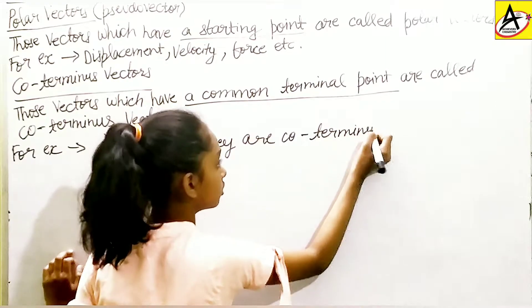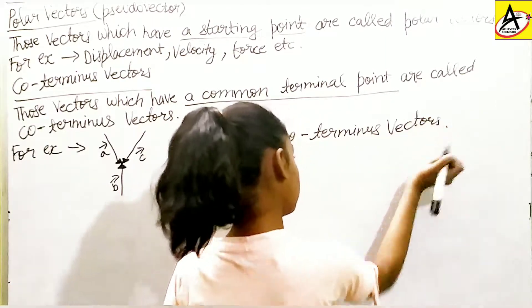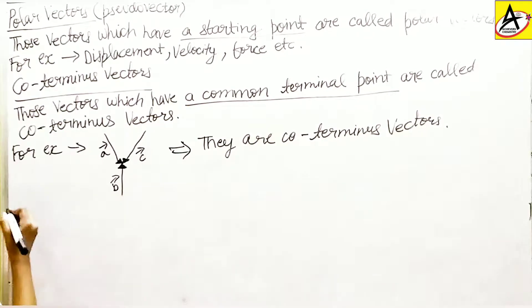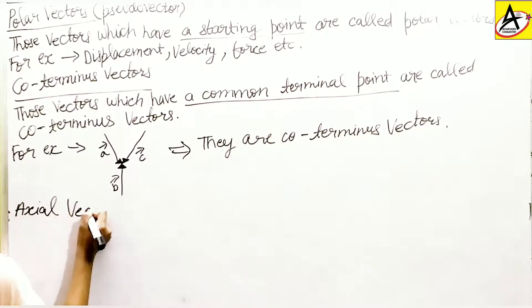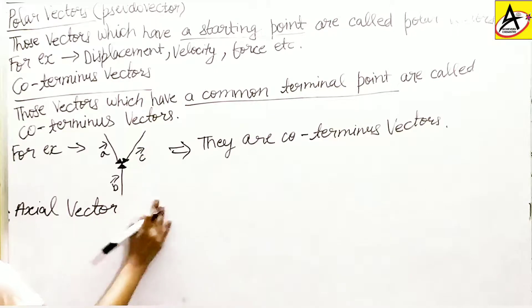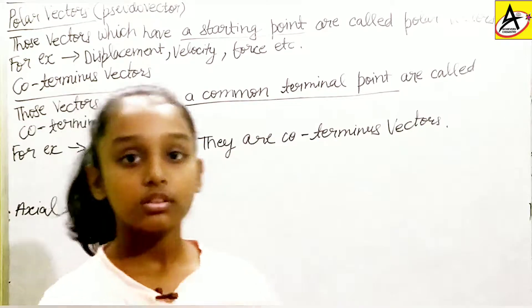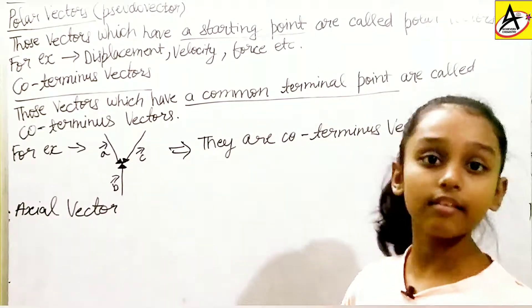These are coterminous vectors. I hope you are all enjoying this topic. Now let's talk about the third and last type, which is axial vector.